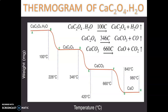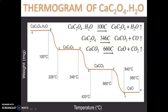We are studying the thermogram of CaC2O4·H2O. I am marking seven points on the thermogram: the initial temperature as A, then 100°C as B, 226°C as C, 346°C as D, 420°C as E, 660°C as F, 840°C as G, and 980°C as H. These are the different regions of the thermogram.